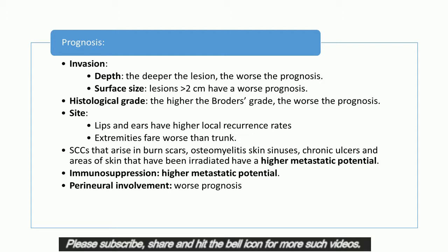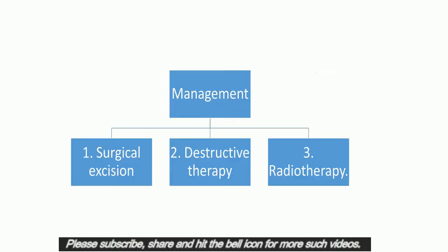4. Etiology — SCCs that arise in burn scars, osteomyelitis skin sinuses, chronic ulcers, and areas of skin that have been irradiated have a higher metastatic potential. 5. Immunosuppression — SCC will invade further in those with impaired immune response. 6. Tumors with perineural involvement have a worse prognosis and require wider than usual clearance.